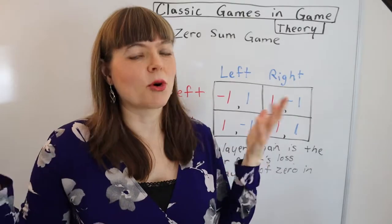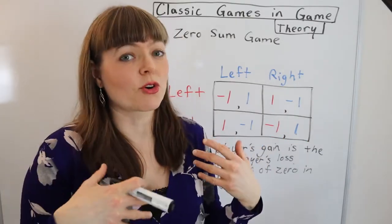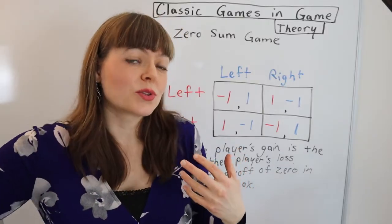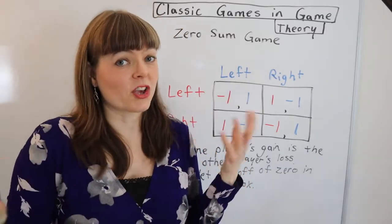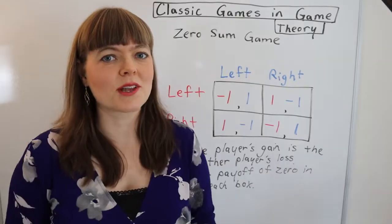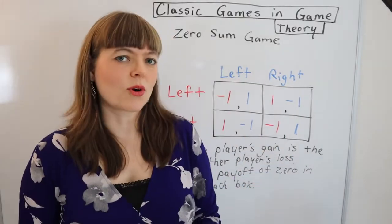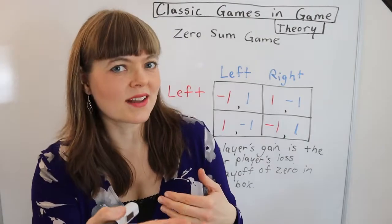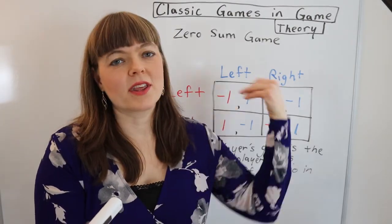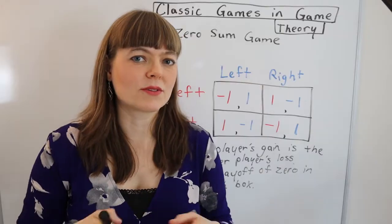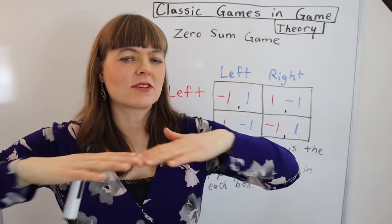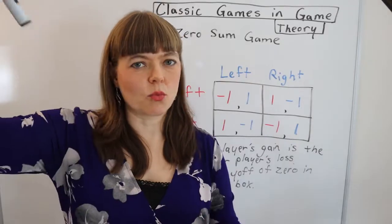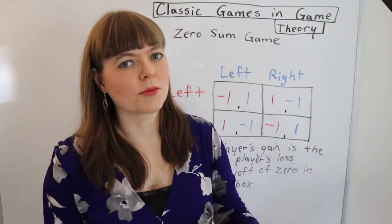One person getting more money toward their charity means that everybody else loses money from what they could have gotten. So that's also zero sum. Elections are zero sum because there's a winner and a loser and any gains that one group makes is putting the other group behind by that amount. So there's sort of a net amount of stuff to be had and one group getting it means the other group doesn't.